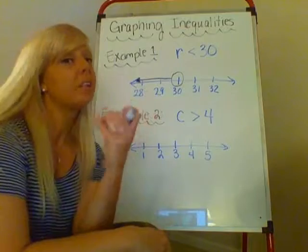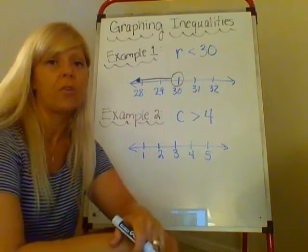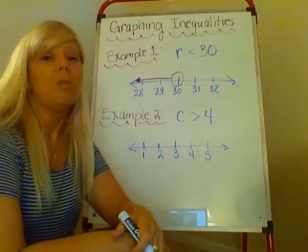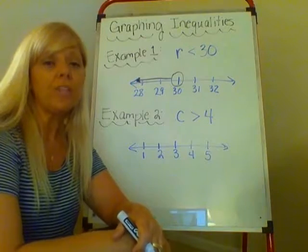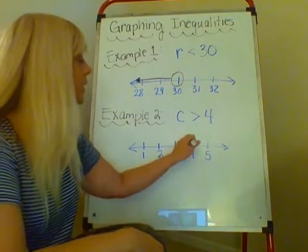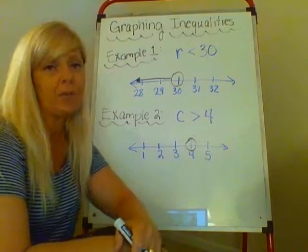So again, more than four cookies, that means we could have four and a half cookies, we could have four cookies and then just a little nibble, so 4.1 or four and one tenth. So again we're going to put an open dot on four, meaning it can be really close to four, it just can't be four.